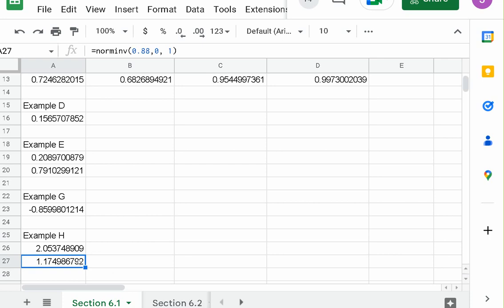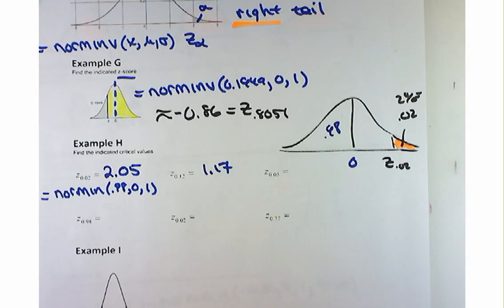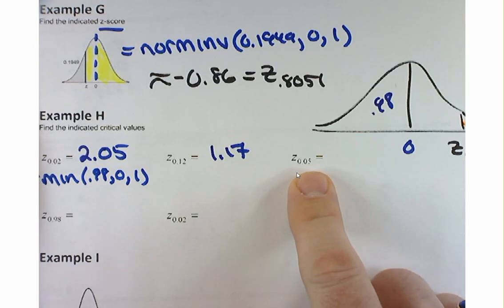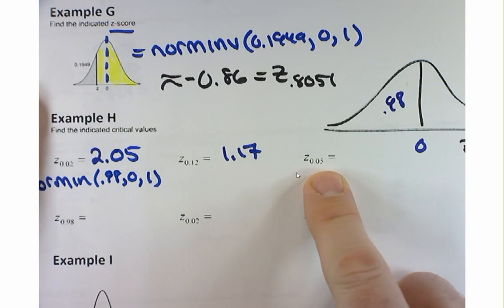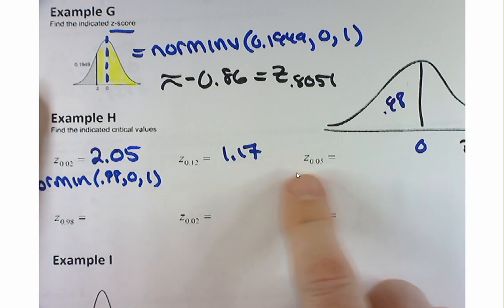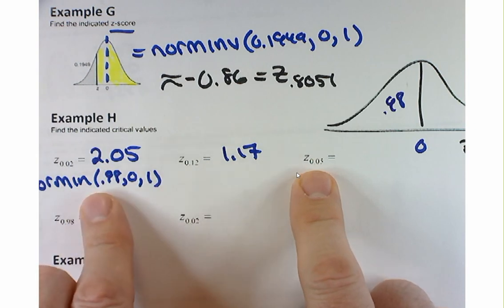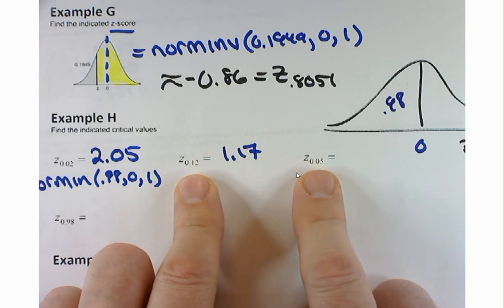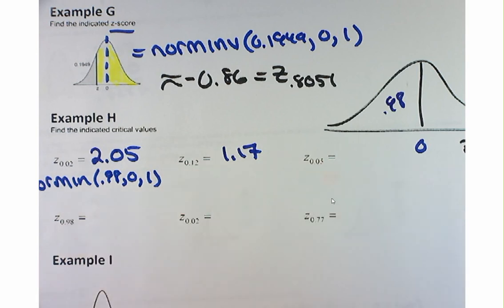If you're getting clever, you can just copy this command and paste it, then make a simple edit to get Z sub 0.05. The edit is: instead of 0.88, put in 0.95. So norm inverse of 0.95, 0, 1 — let's make that change.